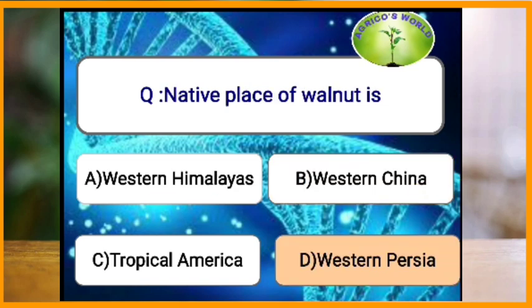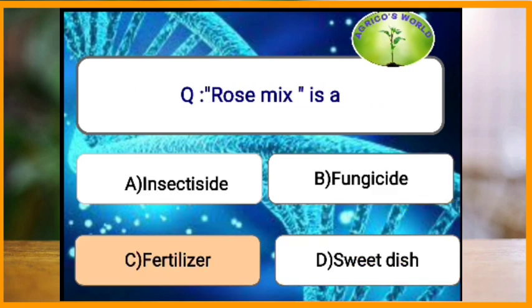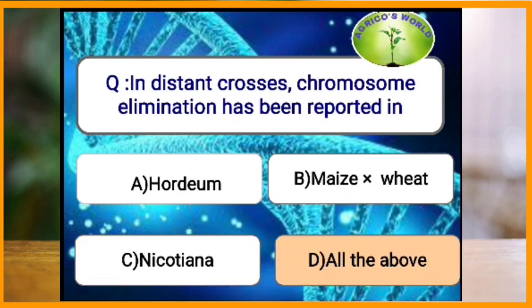What is the native place of walnut? The native place of walnut is western Persia. Rose mix is a fertilizer that has 24 percent nutrients and 76 percent filler material. Rose mix contains nutrients in the NPK ratio of 6 percent, 12 percent, and 6 percent.